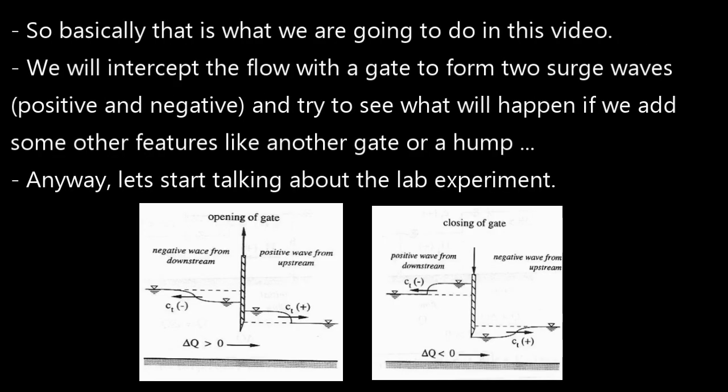So basically that's what we are going to do in this video. We will intercept the flow with the gate to form two surge waves, positive and negative, and try to see what will happen if we add some other features like another gate or a hump.